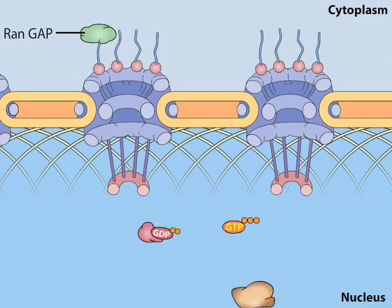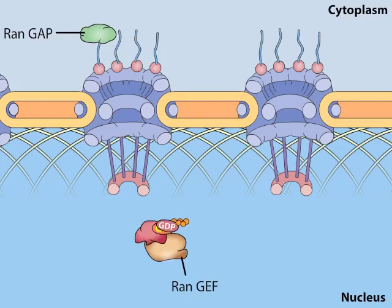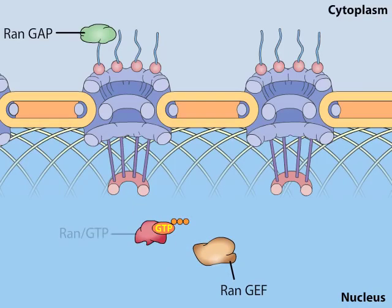In the nucleus, another protein called RAN-GEF, for Guanine Nucleotide Exchange Factor, stimulates RAN-GDP to release its GDP and pick up GTP. In this form, RAN-GTP can disrupt the binding of importin and its cargo, triggering the release of the cargo in the nucleus.